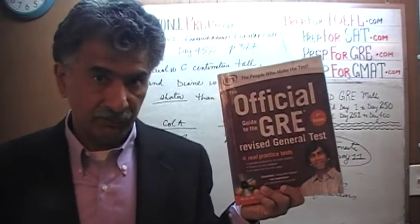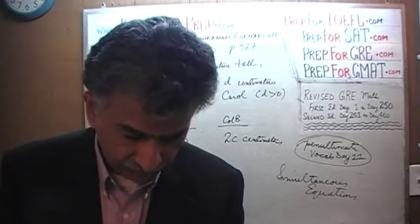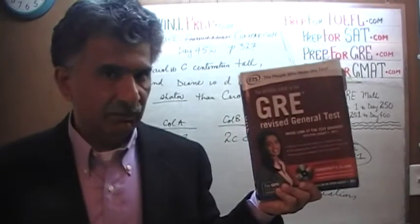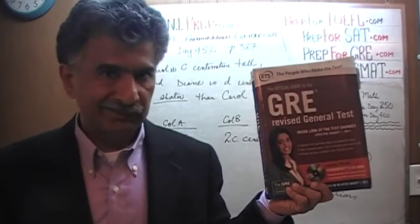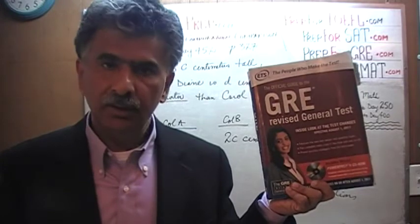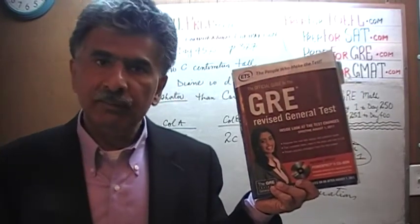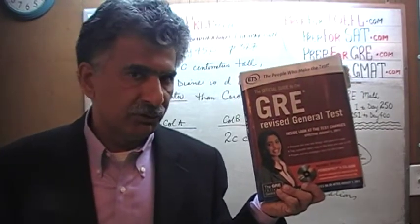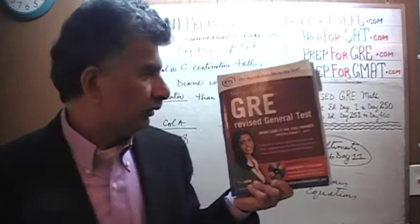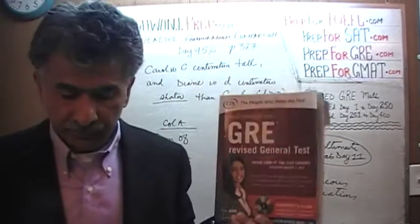This book, the second edition, happens to contain in most cases exactly the same problems, and again in most cases appearing on exactly the same page numbers as the ones that appeared in the first edition of the revised GRE. We are finished doing all the problems in the first edition. You will find the original solutions from day number 1 through 250.